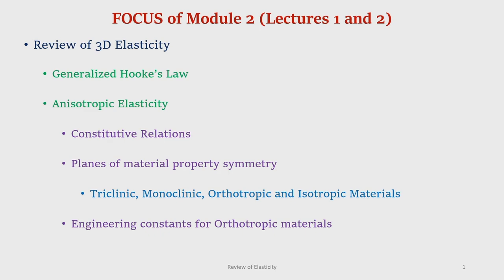We will discuss the different types of materials like triclinic, monoclinic, orthotropic, and anisotropic with reference to the existence of planes of material property symmetry. Then we will have a detailed understanding of the engineering constants for orthotropic materials.